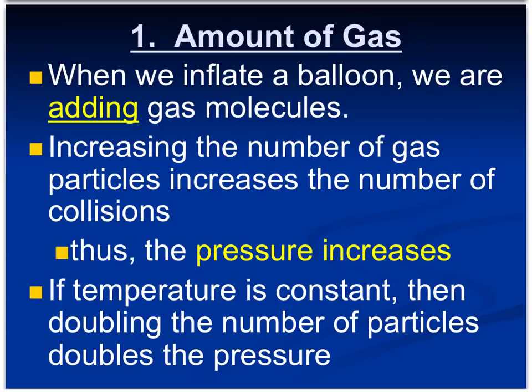One of the biggest things that can affect gas pressure is the amount of gas. When we inflate a balloon, we are adding gas molecules. Increasing the number of gas particles increases the number of collisions, and thus the pressure increases. As an analogy: if the freshmen or seniors didn't come to school one day, there'd be fewer people in the hallways and you wouldn't be bumping into as many people. The more gas particles we have, the more collisions there are, and since pressure is defined by the force and number of those collisions, we're increasing gas pressure. If temperature is constant, doubling the number of particles doubles the pressure — a direct proportional relationship.